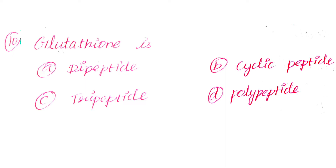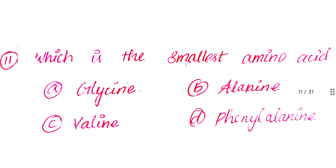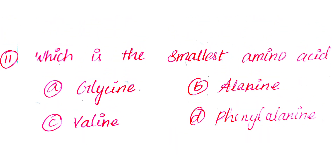Question number 11: Which is the smallest amino acid? Option A: Glycine. Option B: Alanine. Option C: Valine. Option D: Phenylalanine. The answer is Option A: Glycine.